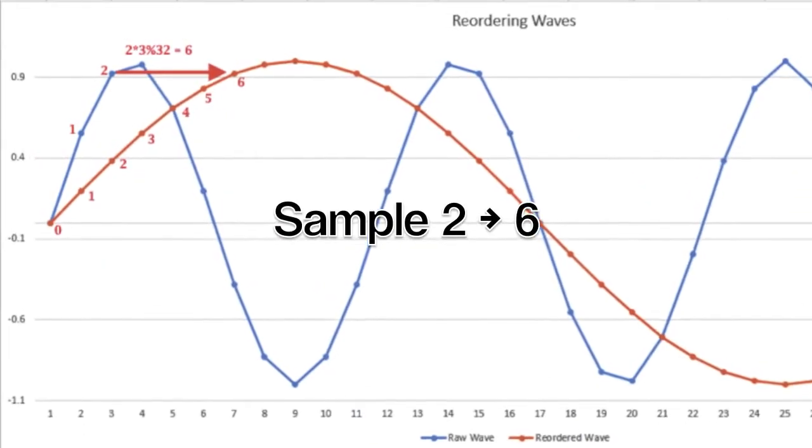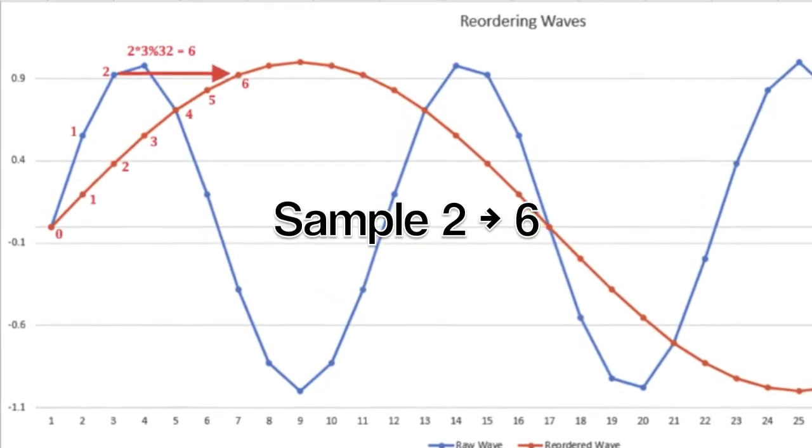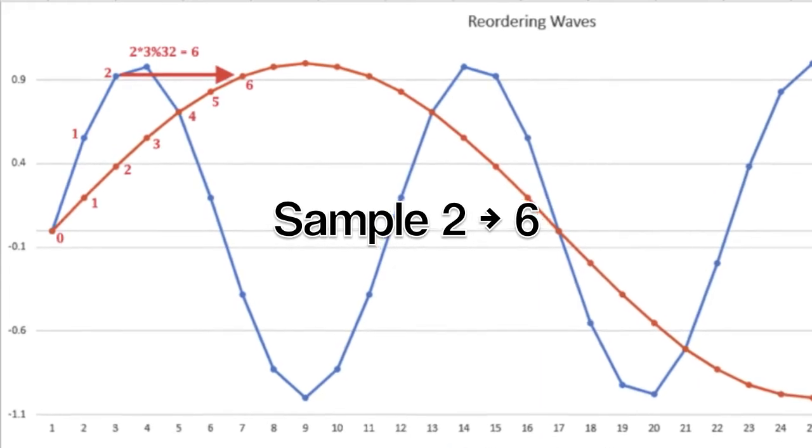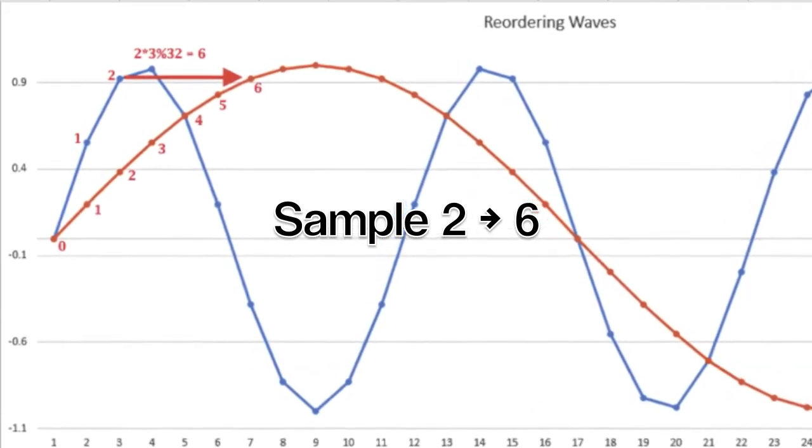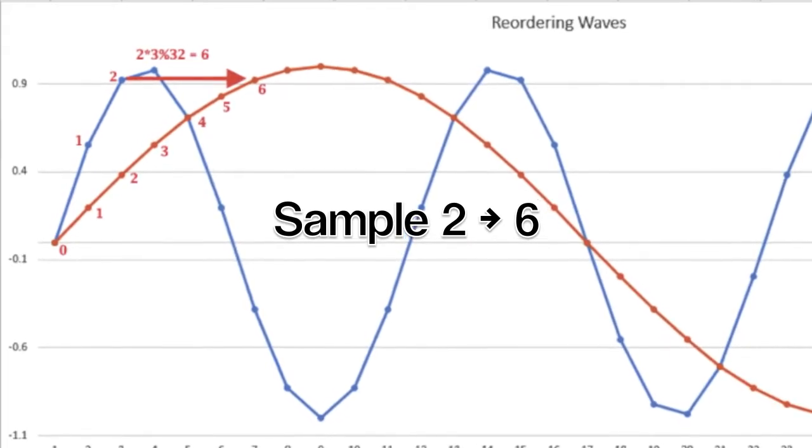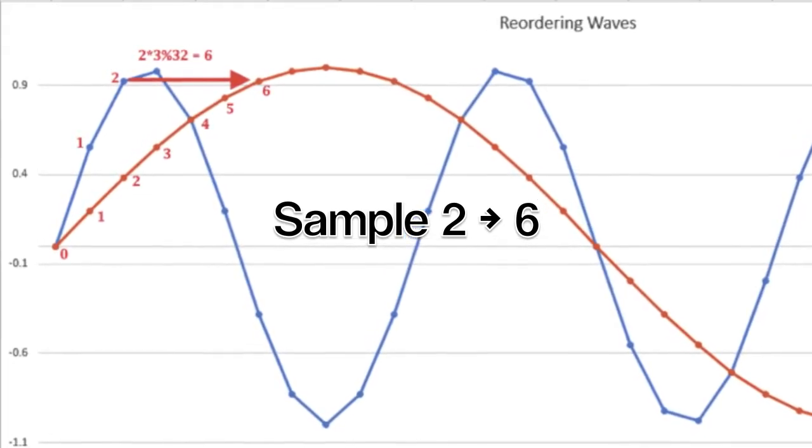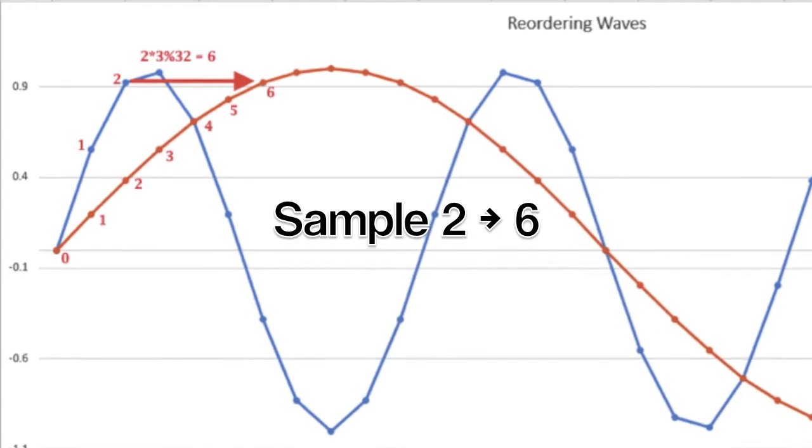For sample two, two times three is six. So sample two of the three cycle wave moves to sample number six of the one cycle wave. We can easily do this with a pair of arrays in C, C++, or Java. We are simply recalculating the index of the array.